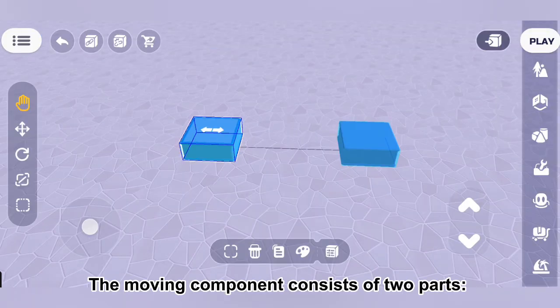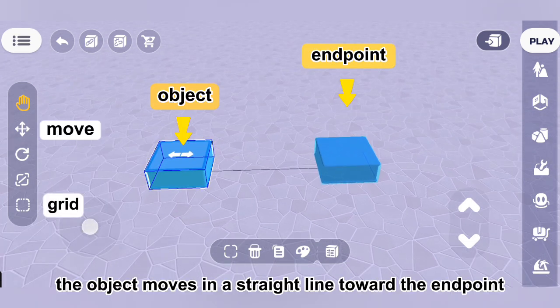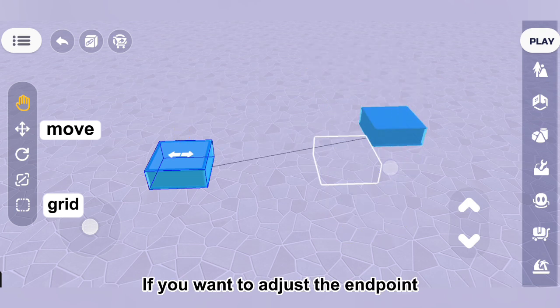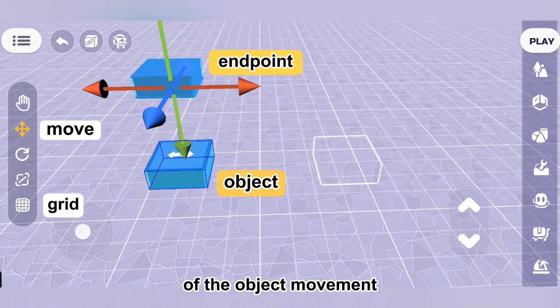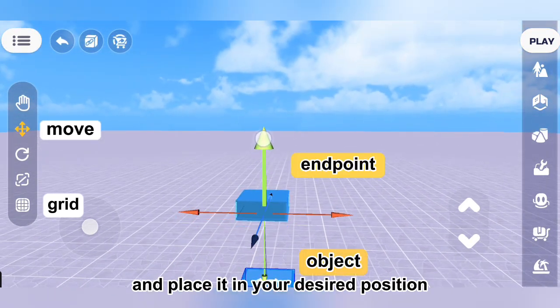The moving component consists of two parts, an object and an endpoint. The object moves in a straight line toward the endpoint. If you want to adjust the endpoint of the object movement, please tap the cube representing the endpoint and place it in your desired position.